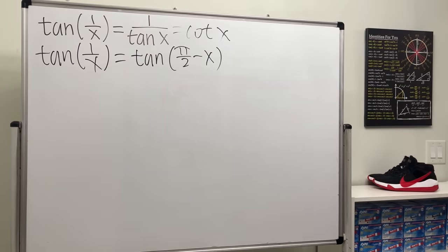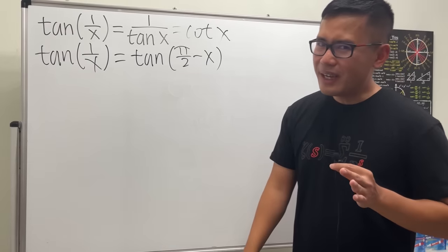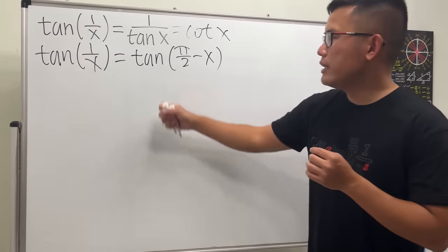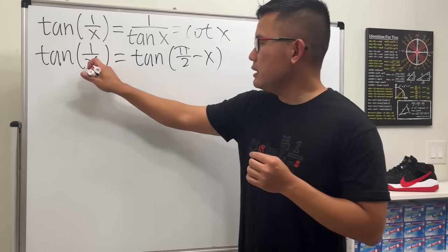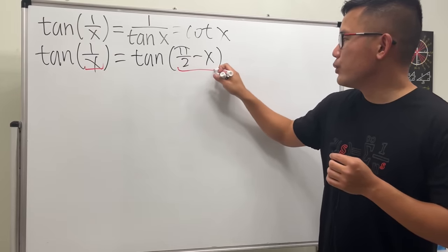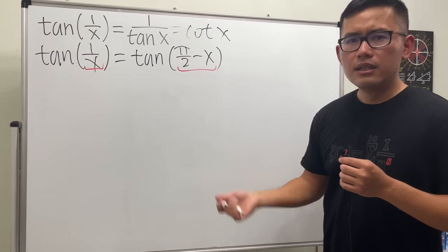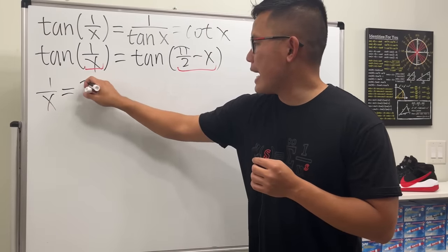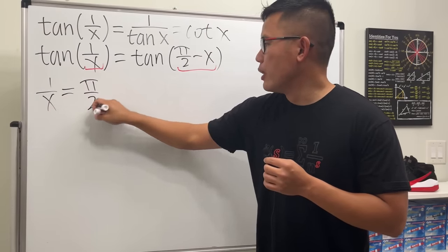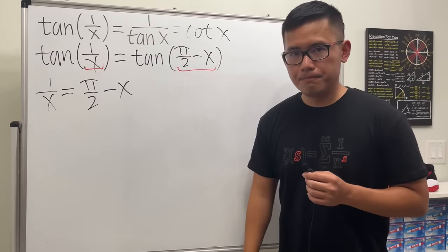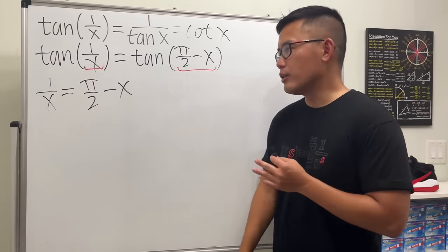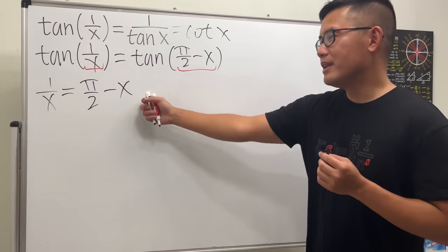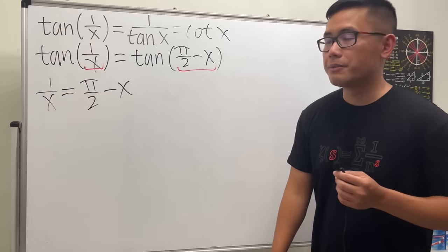This is so cool because on the left-hand side we have tangent, and on the right-hand side we have tangent, so the arguments must be equal. That means we must have 1/x equal to π/2 minus x. This is going to give us two answers — why two? Because you will see that this is actually a quadratic equation.